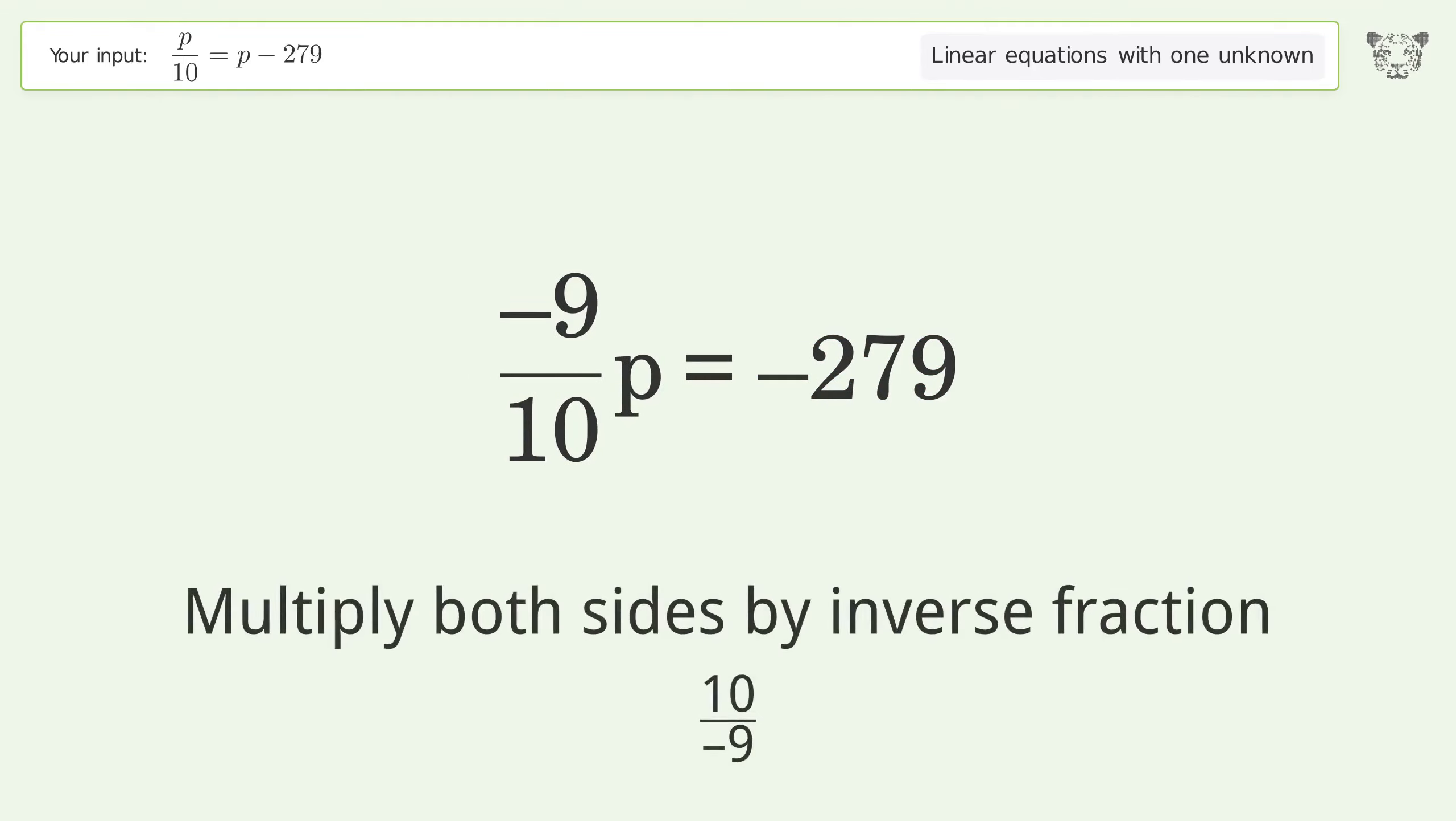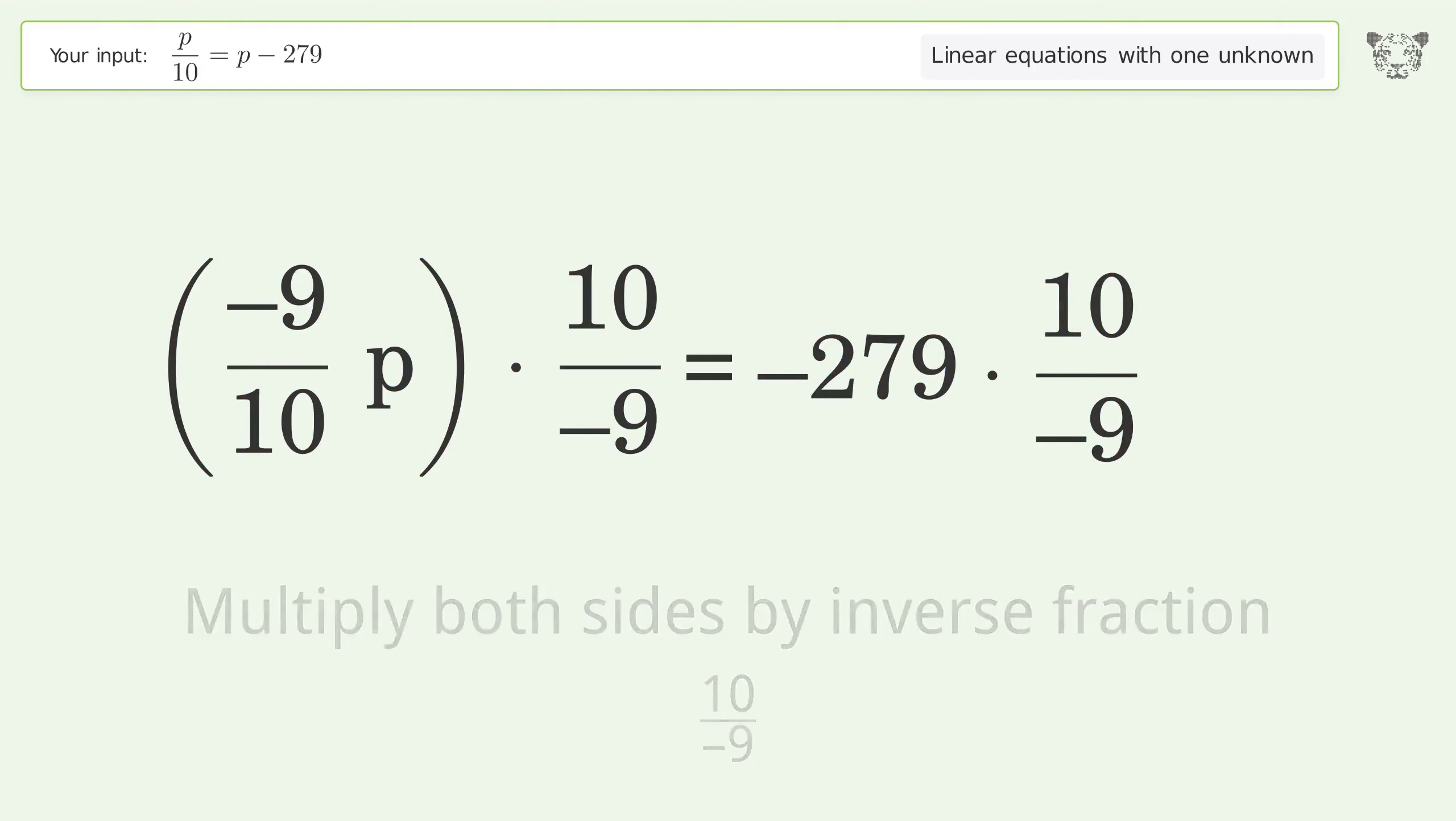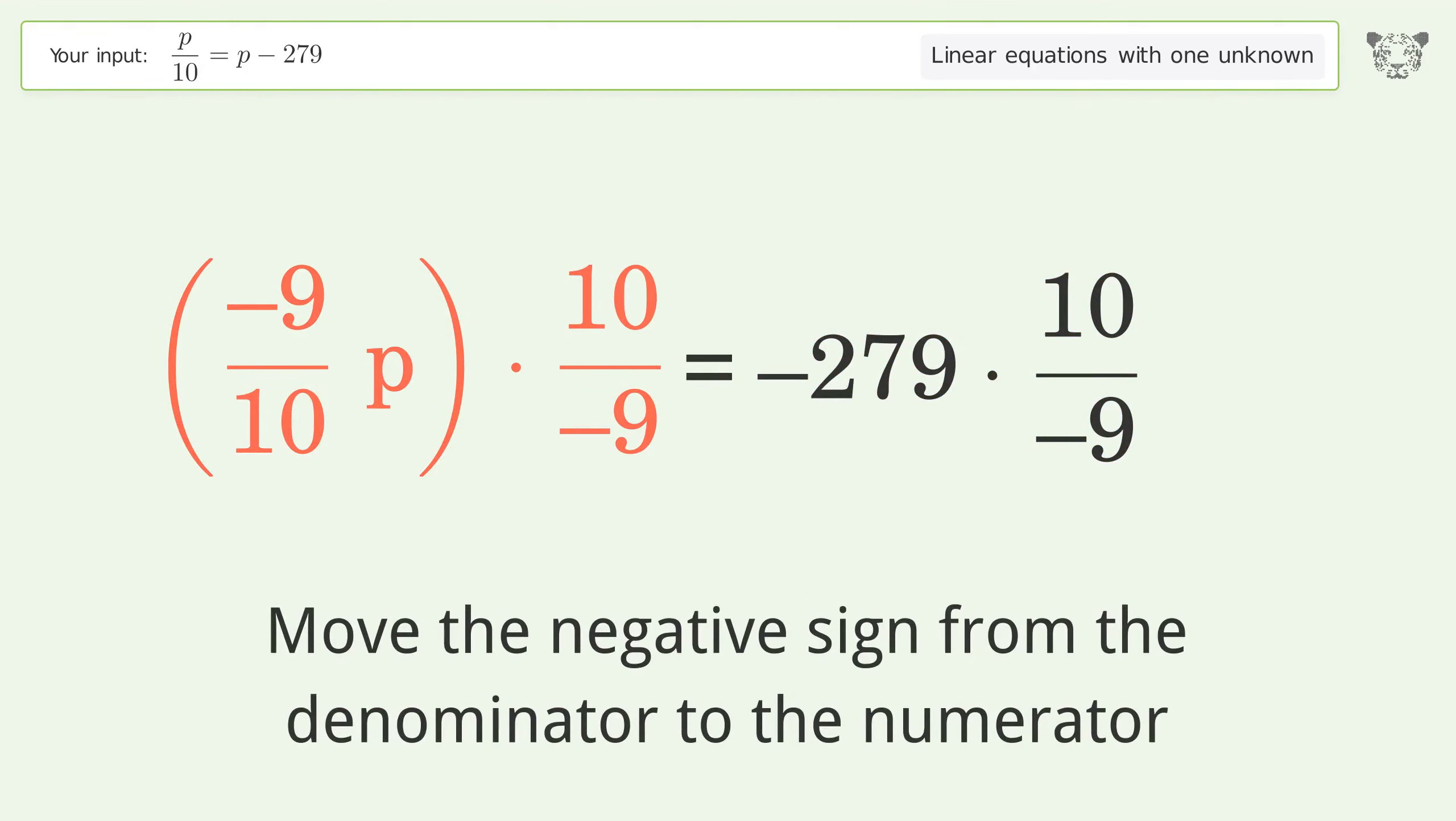Multiply both sides by inverse fraction 10 over negative 9. Move the negative sign from the denominator to the numerator.